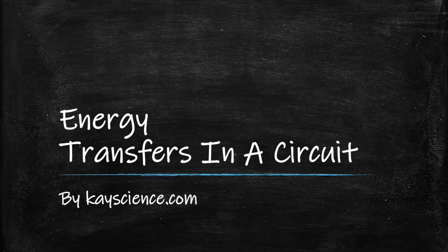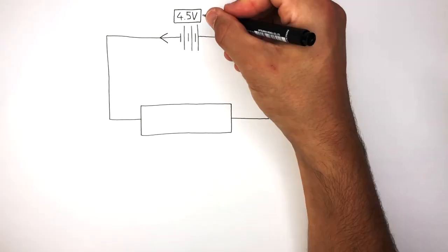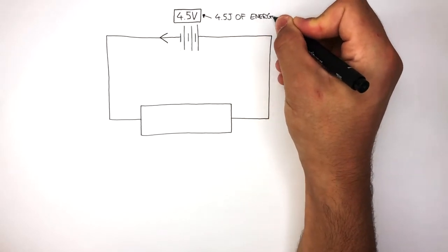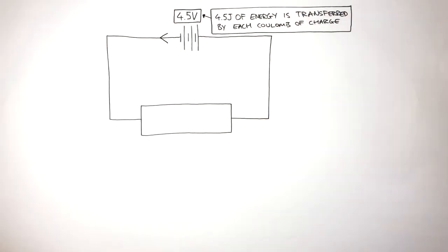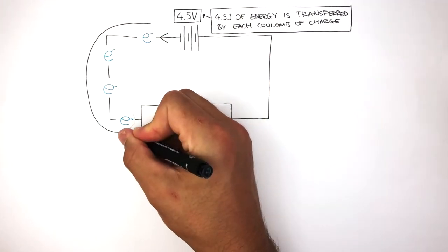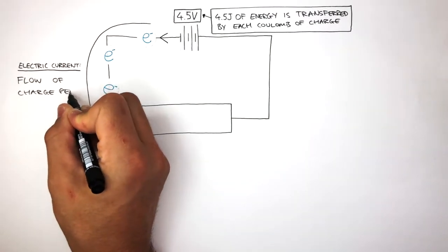Energy Transfers in a Circuit by kscience.com. Here we have a simple series circuit which contains a 4.5 volt battery and a resistor. 4.5 volts means 4.5 joules of energy is transferred by each coulomb of charge. The battery causes the current to flow around the circuit, and the electric current is the flow of charge per second.